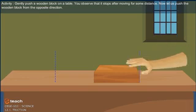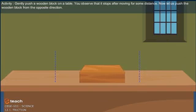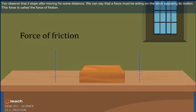Now, let us push the wooden block from the opposite direction. You observe that it stops after moving for some distance. We can say that a force must be acting on the block, opposing its motion. This force is called the force of friction.